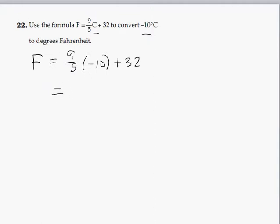When we multiply nine-fifths times negative 10, negative 10 over 5 is negative 2. And so 9 times negative 2 is negative 18. And then negative 18 plus 32 is going to give us 14.